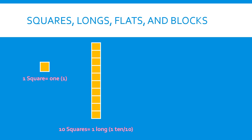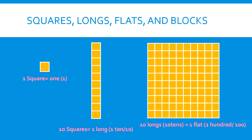If we put 10 longs together — 1, 2, 3, 4, 5, 6, 7, 8, 9, 10 — we can form 1 flat, which is equal to 100.